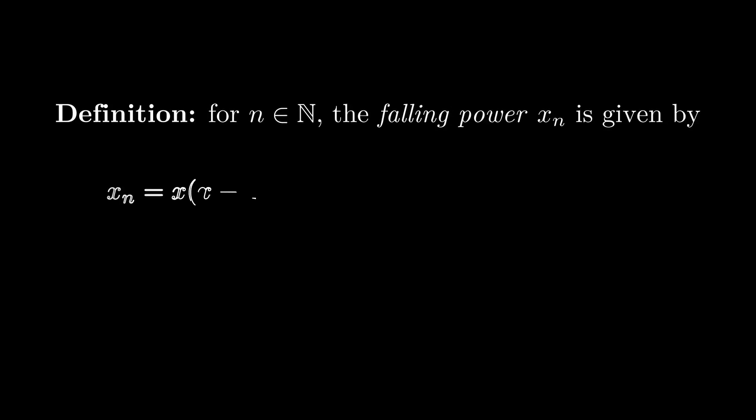There's one last thing we need to talk about before getting to the umbral stuff. Falling powers are kinda like powers, kinda like factorials. They're decreasing products starting at x with n terms.